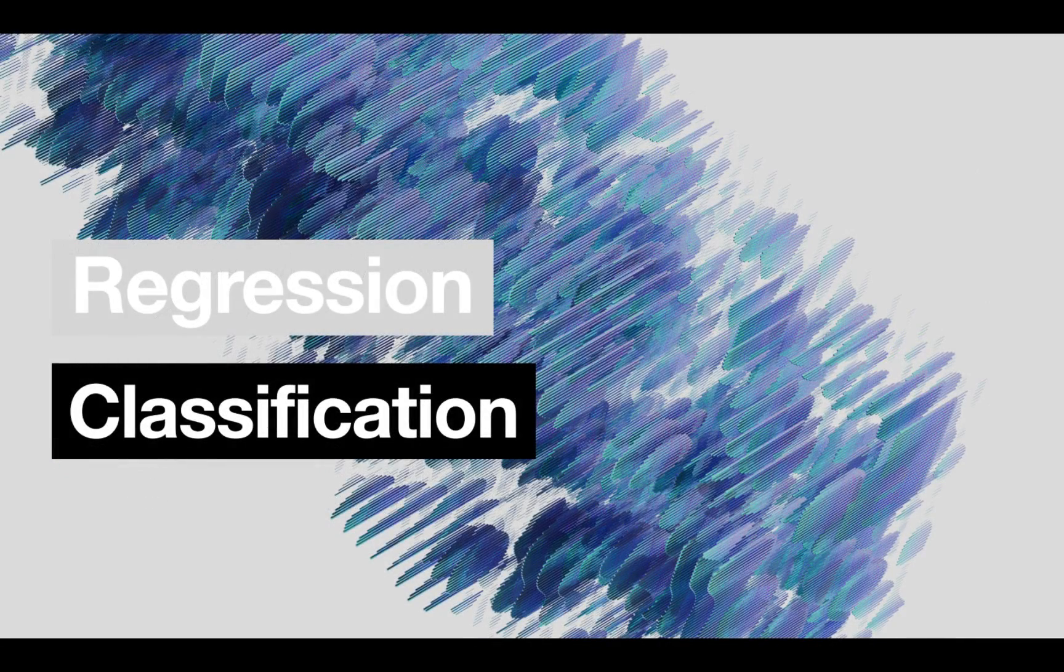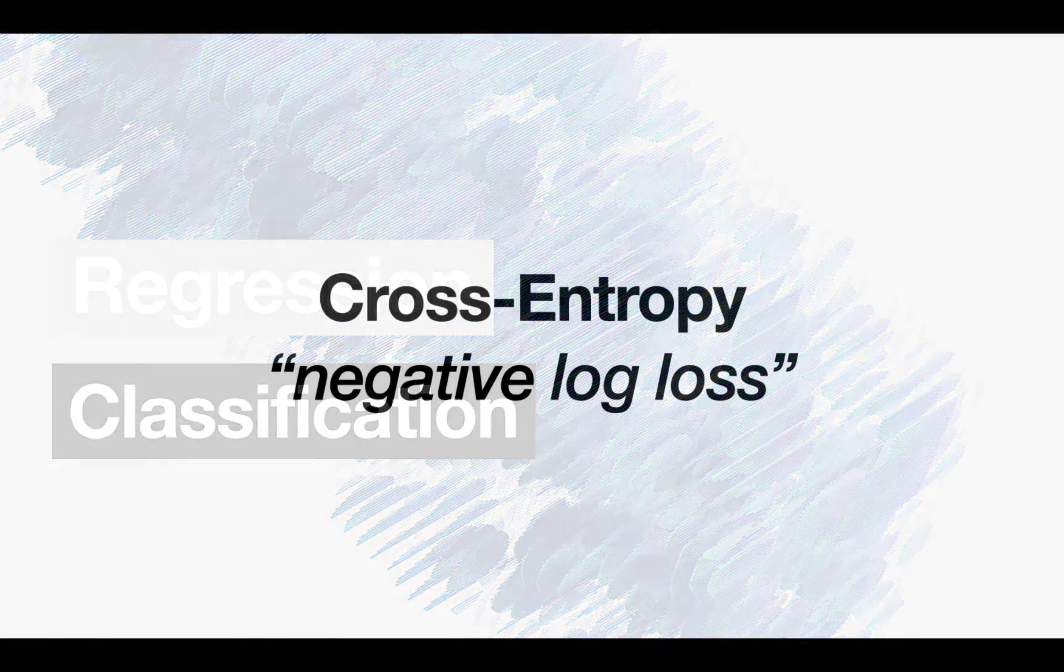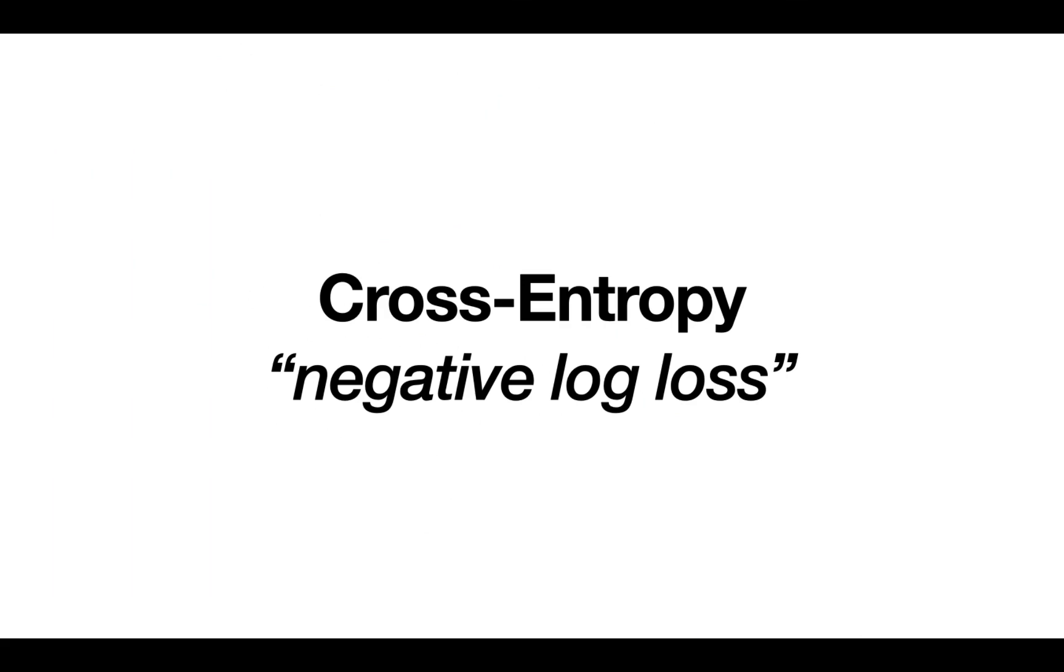Next up is classification. Classification is all about putting things into categories, and these can be everything from two categories to thousands of categories. One of the most common things that unified classification loss functions is what is known as cross-entropy. Cross-entropy really means the negative log loss.